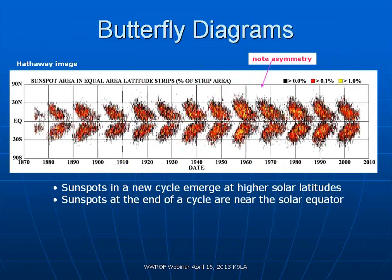Butterfly diagrams are called that because they look like butterfly wings. They are simply a plot of the latitude on the sun at which a sunspot region emerges versus time. For example, the biggest solar cycle in recorded history — cycle 19 — shows that the first sunspots emerged at relatively high solar latitudes, around 30 north and 30 south. As the solar cycle progresses, sunspots emerge at lower and lower latitudes and end up near the solar equator. This is one way to determine which cycle a sunspot region belongs to.